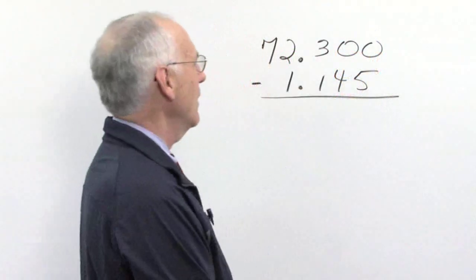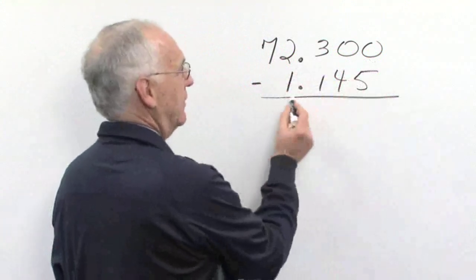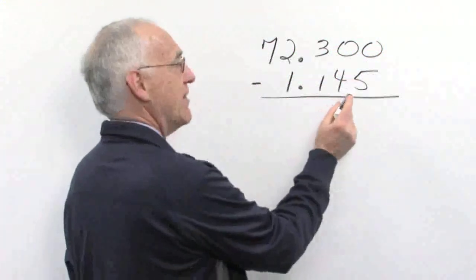Let's take a look at this problem. Here we're subtracting seventy-two and three hundred thousandths minus one and one hundred forty-five thousandths.